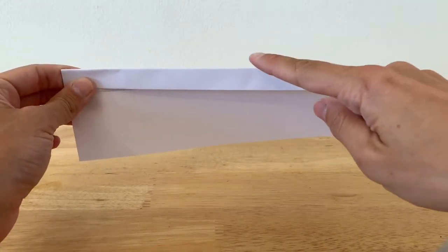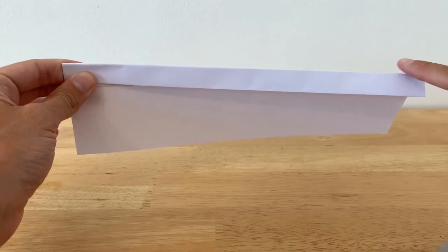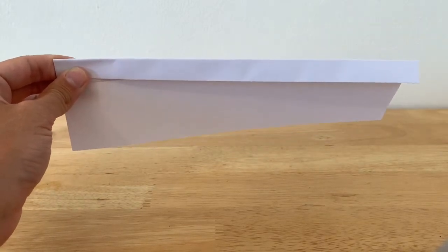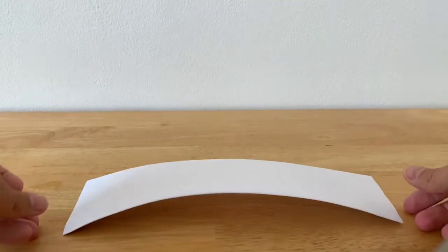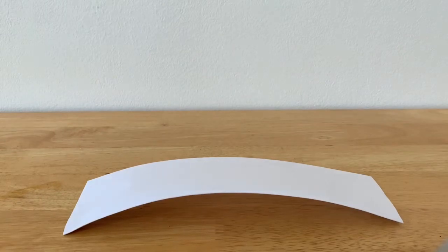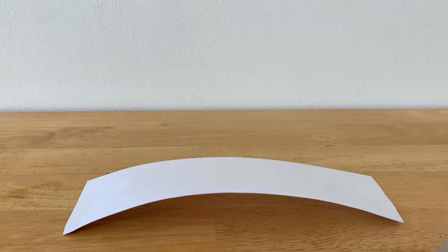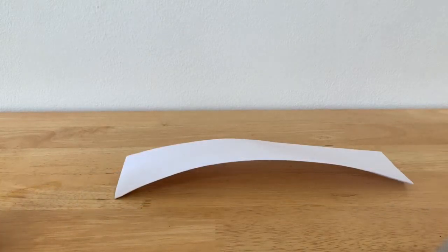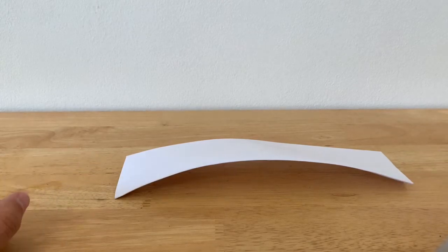Now what we're going to do is we're going to just run this edge here along the corner of a table. You can see it's given it a nice curve shape. That's going to help us turn this bit of paper into a tube. So we've got our piece of A4 paper with a slight curve in it.